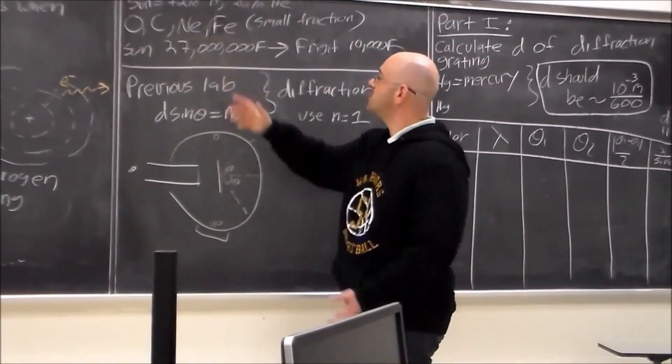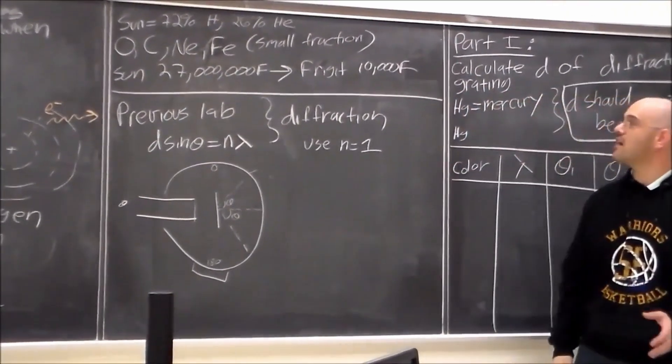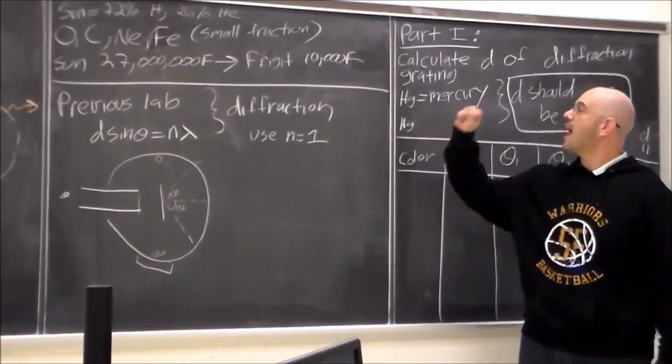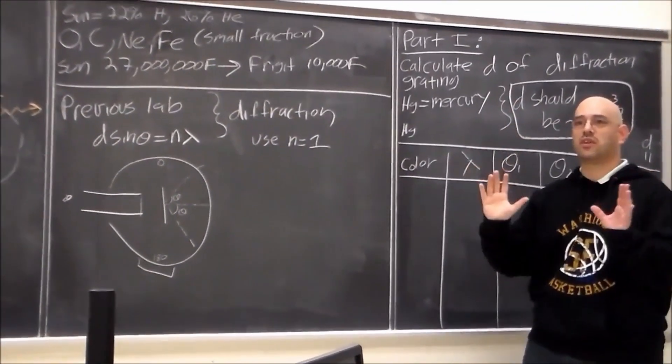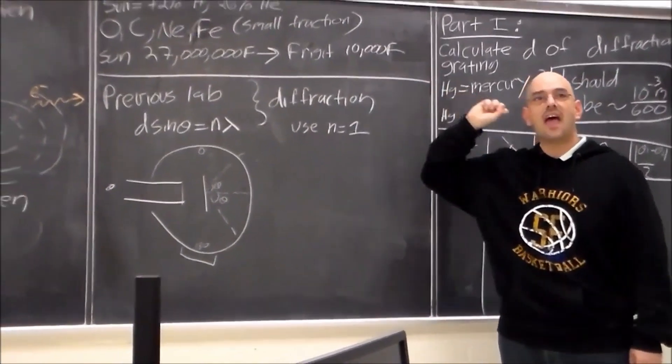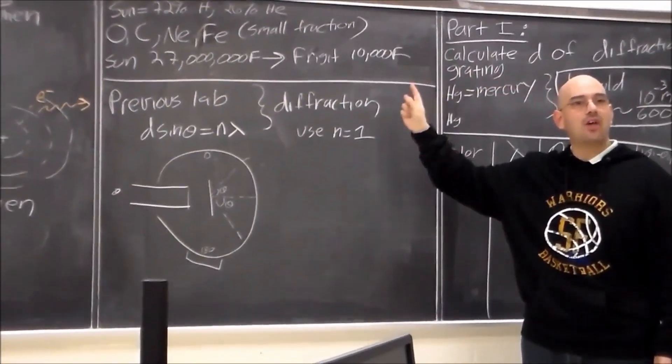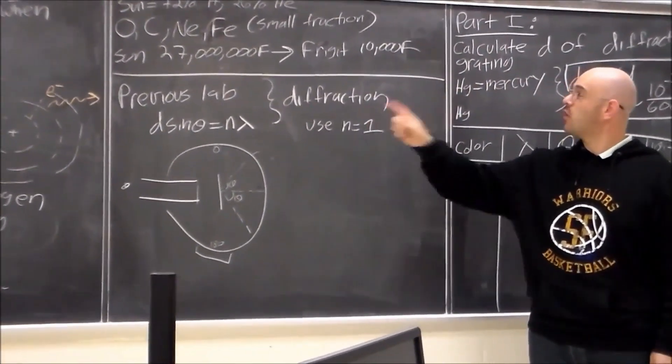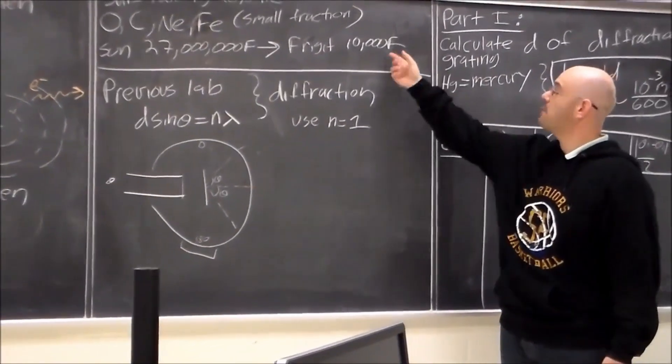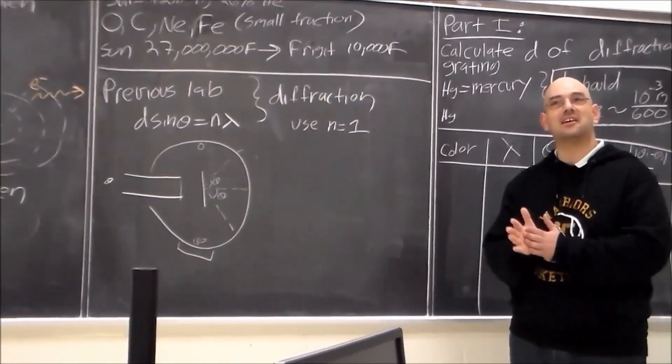And another thing that's interesting to note is the sun, at the center of the sun, it's 27 million degrees Fahrenheit and at the outside edge of the sun, it's really a cold 10,000 degrees Fahrenheit. How do you think people know that the sun is 27 million degrees on the inside and 10 million degrees on the outside? Anyone have any idea?